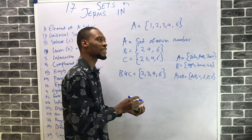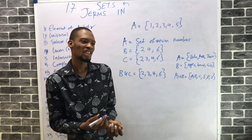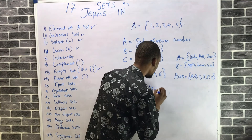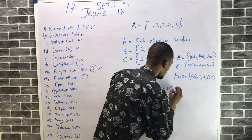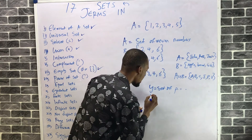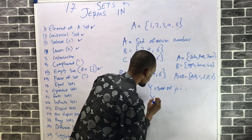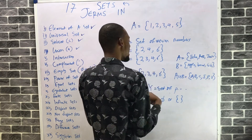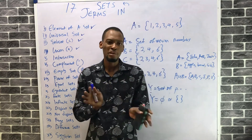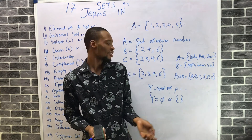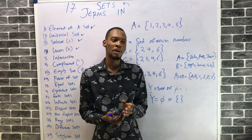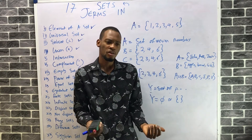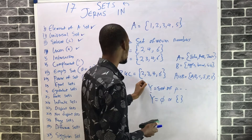An empty set is a set that has no members. For example, if Y is the set of persons who will not die, then Y is simply empty — represented as {} or ∅ — because everybody dies. Another example: the set of primary five students who are professors is also empty, since no primary five student is a professor. That's what empty sets represent.